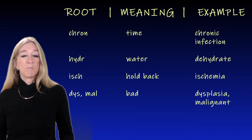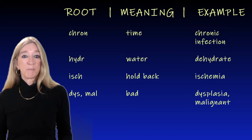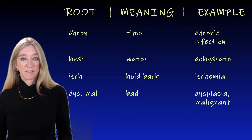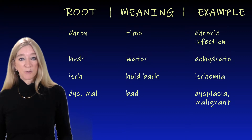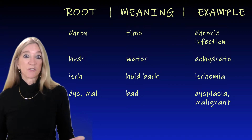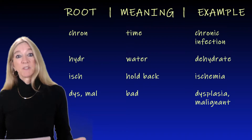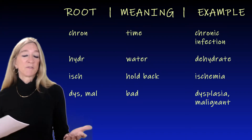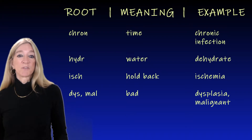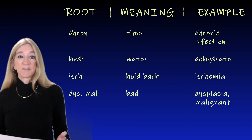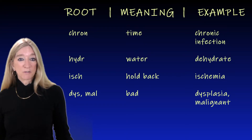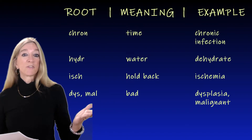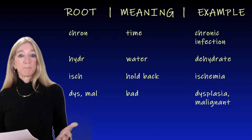The next roots are 'dys' and 'mal,' meaning bad. Dysplasia is bad formation. Malignant, of course, is bad — usually cancerous, a malignant tumor. You can think of numerous examples of everyday words with these roots, such as dysfunctional family, malicious, malodorous — having a bad odor — or maltreat, to treat badly.